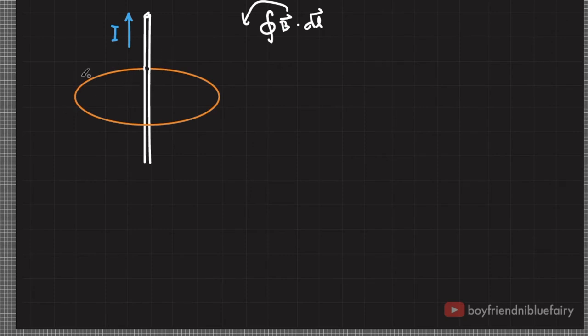Because if I choose this point, for example, it has a distance r from the source. And if I choose this point, it also has a distance r from the source. So essentially, the magnetic field is the same along all points on this current loop.